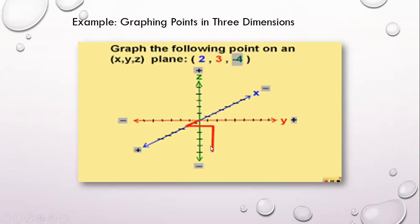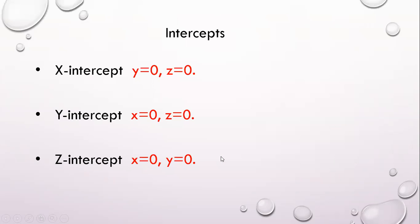Recall that the graph of a linear equation in two dimensions is a straight line — if you just have x and y, it's a straight line. But in three-dimensional space, the graph of a linear equation is a plane, because a plane is defined by three points. You can graph a linear equation in three dimensions by finding the three intercepts.